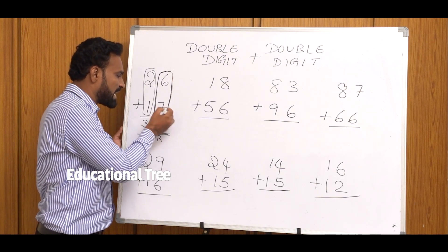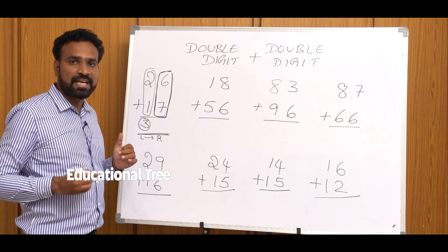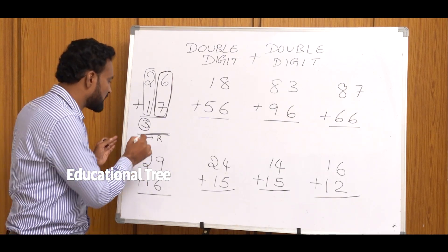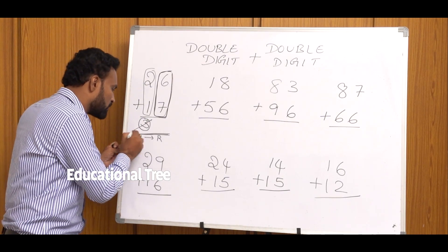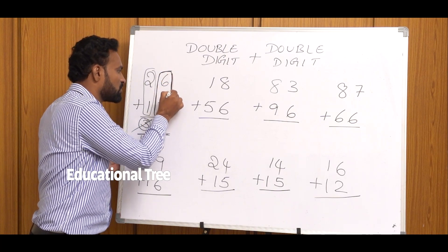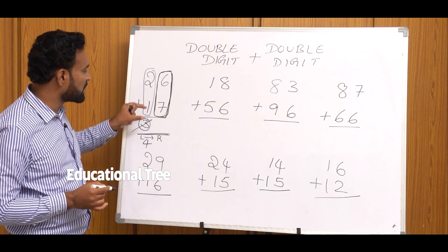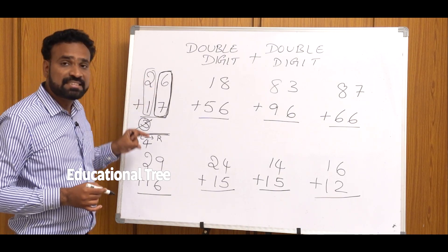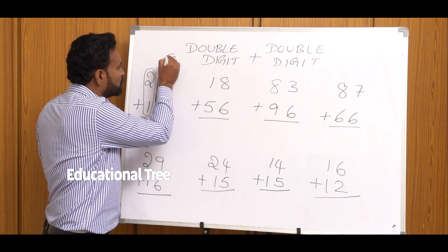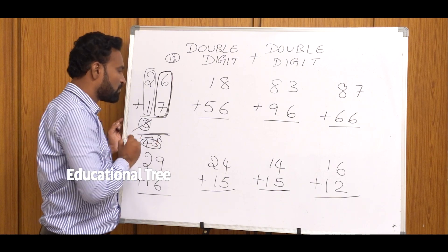When there is a Carry Combination, in the next step we apply the value by adding 1 more. Here, 3 becomes 4. Next step: when there is a carry combination, we apply the End Number concept. If we add these two numbers, the result is 13. In 13, we write 3. So the answer is 43.